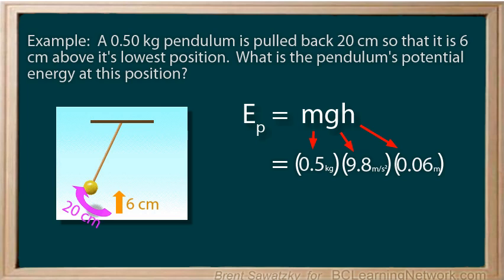And now we can calculate, and we get 0.29 joules. We did 0.29 joules of work to move the pendulum into this position, 6 centimeters vertically above its lowest point. And as long as it's being held up there, it'll store that 0.29 joules of potential energy. If we let it go, the potential energy will start to decrease, and the kinetic energy will increase.